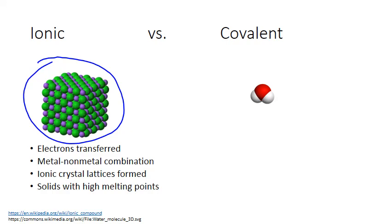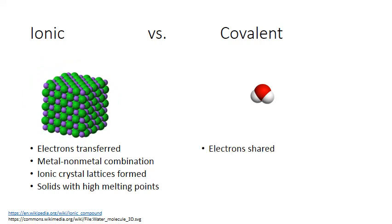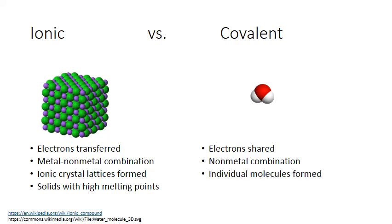Mainly, they are all crystalline solids with very high melting points. On the other hand, when a covalent bond is formed, electrons are shared between atoms. These atoms are usually both nonmetals, neither of which can easily give up electrons. Because electrons are shared between a limited number of atoms, covalent bond formation results in molecules rather than crystal lattices.